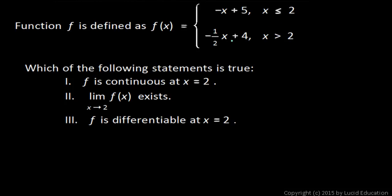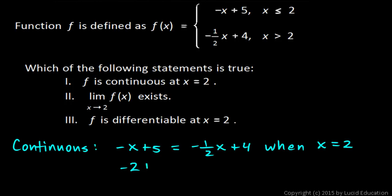So let's evaluate each of those at x equals 2. So I'll write it like this. In order for it to be continuous, this piece here, negative x plus 5, has to equal this piece here, negative 1 half x plus 4, when x equals 2. And each of these can be evaluated pretty easily. Negative 2 plus 5, that's going to be 3.